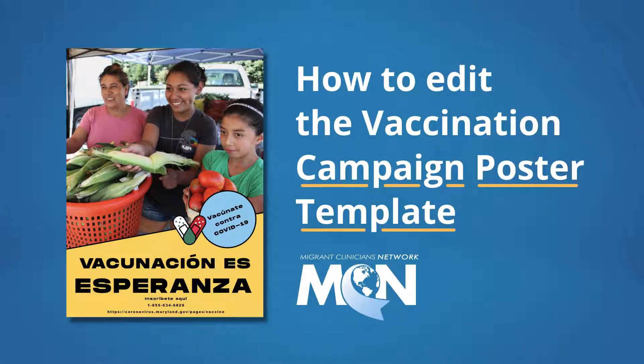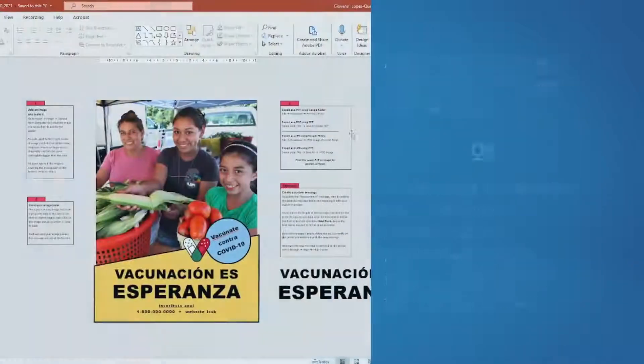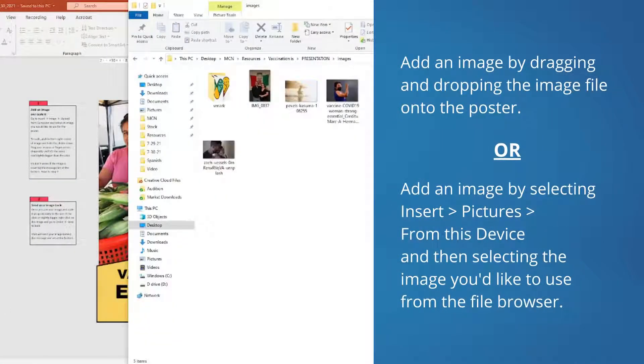How to edit the vaccination campaign poster template. Start by adding your own image to the poster. You can add an image by dragging and dropping the file onto the template.